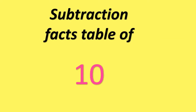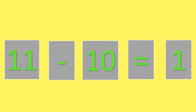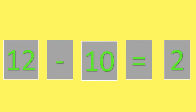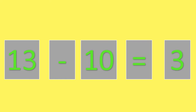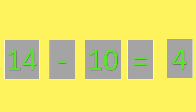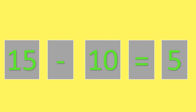Now let's learn the Subtraction Facts Table of 10. 10 minus 10 is equal to 0. 11 minus 10 is equal to 1. 12 minus 10 is equal to 2. 13 minus 10 is equal to 3. 14 minus 10 is equal to 4. 15 minus 10 is equal to 5.